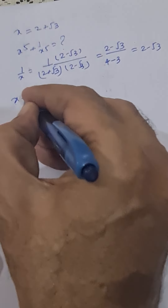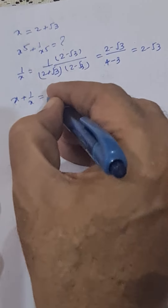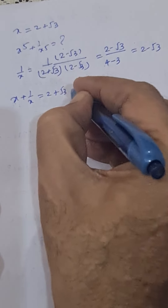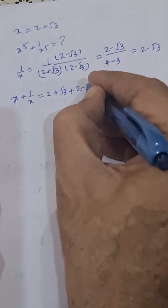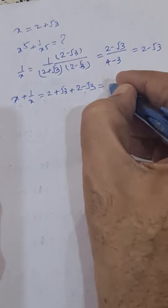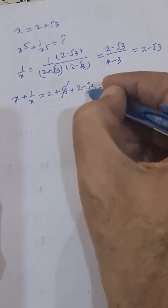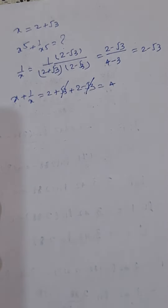We can write x plus 1 upon x equal to 2 plus root 3 plus 2 minus root 3 equal to 4, because root 3 cancels with root 3.